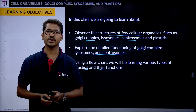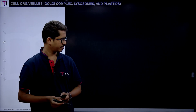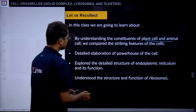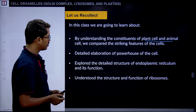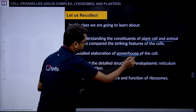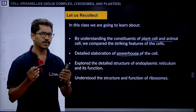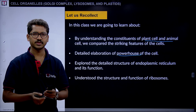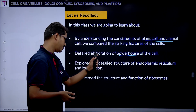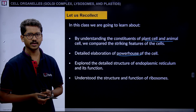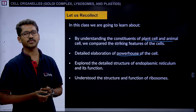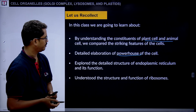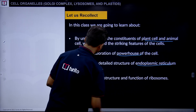Before going into today's details, let us recap what we covered in the previous session. We were trying to understand the constituents of plant and animal cells in quite a detailed way, and we compared their striking features. We also understood the elaboration of the powerhouse of the cell. Can anyone tell me what comes to mind when you hear 'powerhouse of the cell'? It is mitochondria — the organelle that generates energy by the process of respiration.